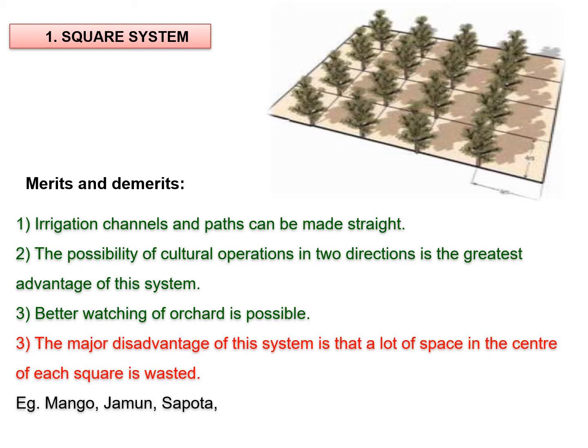The square system of planting is the simplest and most convenient for the layout, and is considered to be the easiest among the others. In this system, row to row distance and plant to plant distance is kept similar. Trees are planted exactly at right angle to each other, so every four plants make one square.